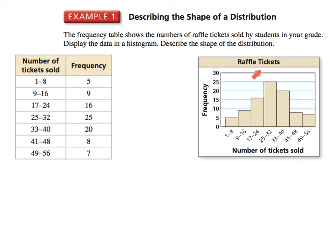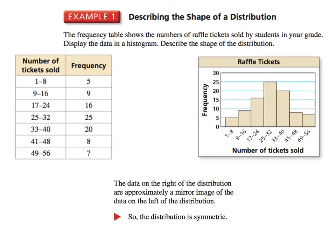Here's what it would look like if we graphed it. The y-axis will always be frequency — the number of times something happens — and the bottom represents the range of number of tickets sold. We make a bar graph: for one through eight, five was the frequency so we graph a bar up to five, and so on. If you draw that line in, the data on the right is approximately a mirrored image, therefore this distribution is symmetric.